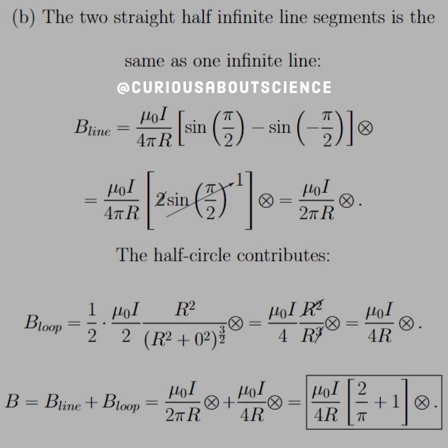So then the total is just the addition of these two segments. They're in the same direction. So that's easy to maneuver for the sake of being able to factor out a mu naught I over four R. We multiply the line segment by two. And that's why we get two over pi and then plus one for just the loop. And that'll conclude this.